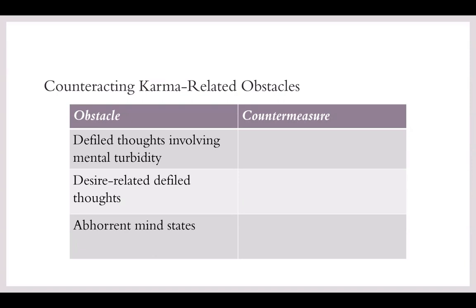The karma-related obstacles are related to the actions of the past and present and how they're affecting our minds when we try to sit down and meditate. The first state Master Ji gives as an example — and these are not exhaustive, just examples — is experiencing defiled thoughts involving mental turbidity. Turbidity means something like muddy, foggy, or in turmoil, so you can get an idea of what this state would feel like.